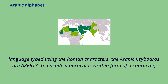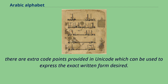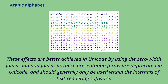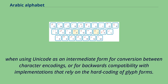To encode a particular written form of a character, there are extra code points provided in Unicode. The Arabic presentation forms-A range contains ligatures, while the Arabic presentation forms-B range contains the positional variants. These effects are better achieved in Unicode by using the zero-width joiner and non-joiner, as these presentation forms are deprecated in Unicode and should generally only be used within the internals of text rendering software or for backwards compatibility.